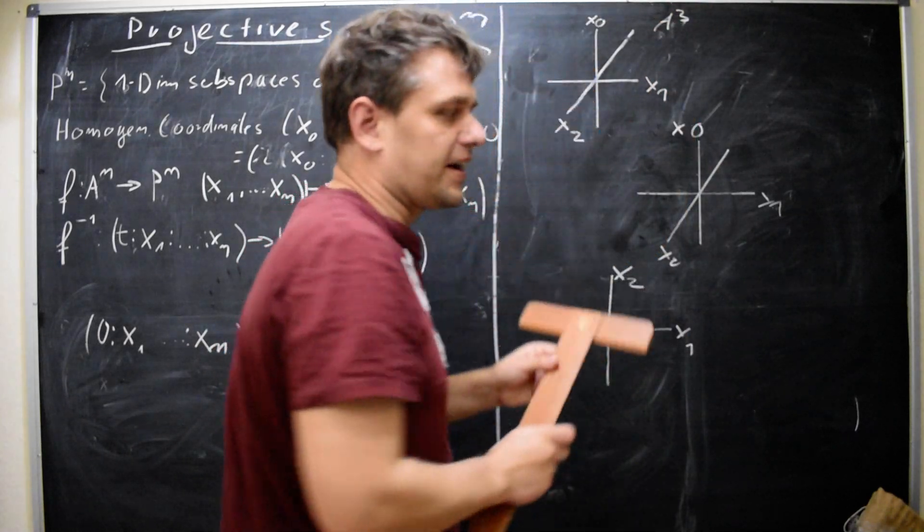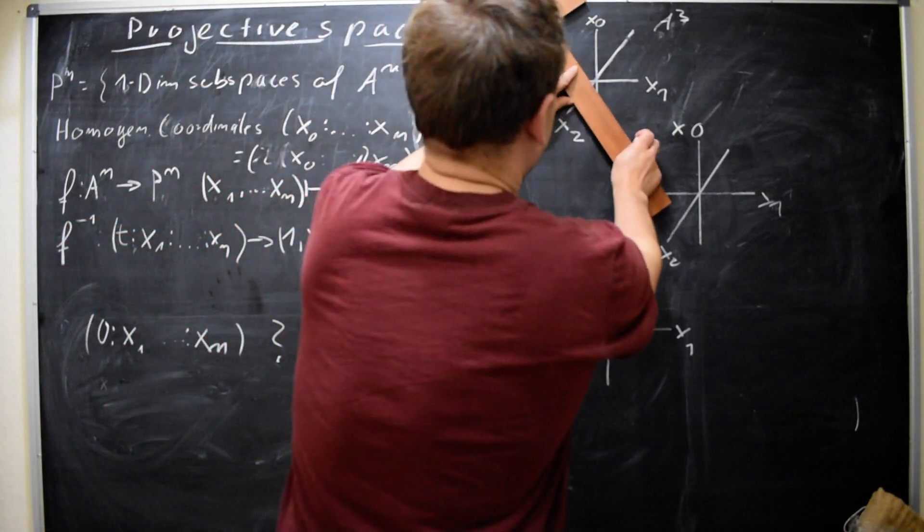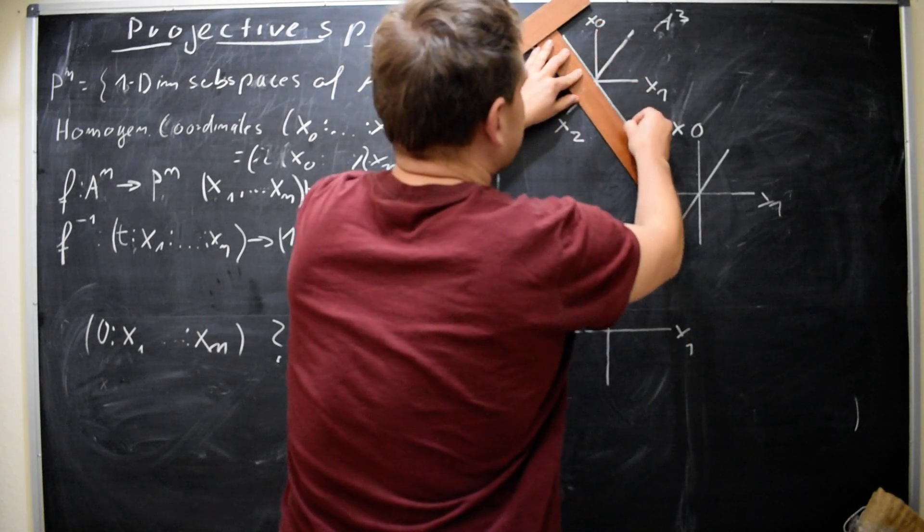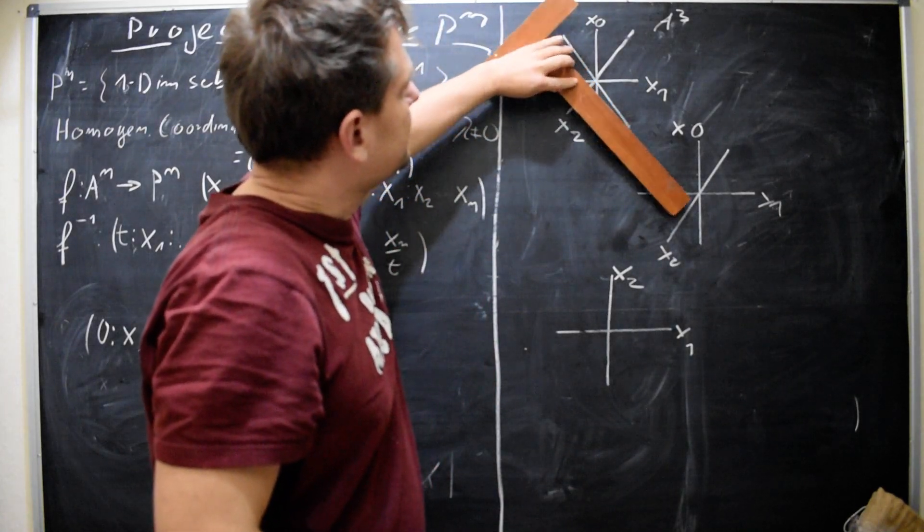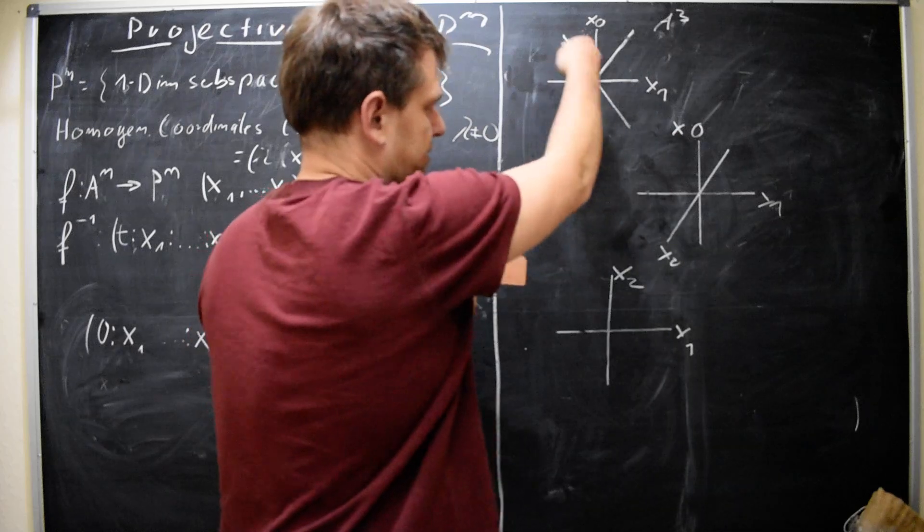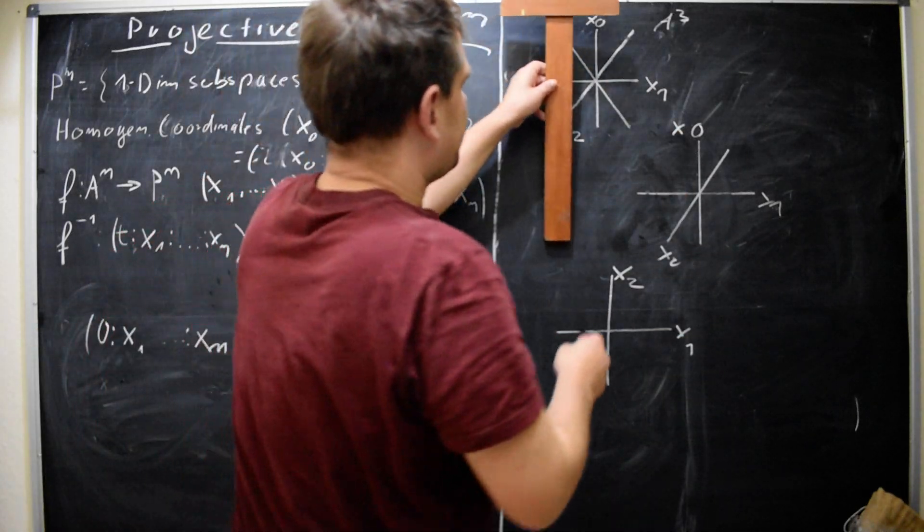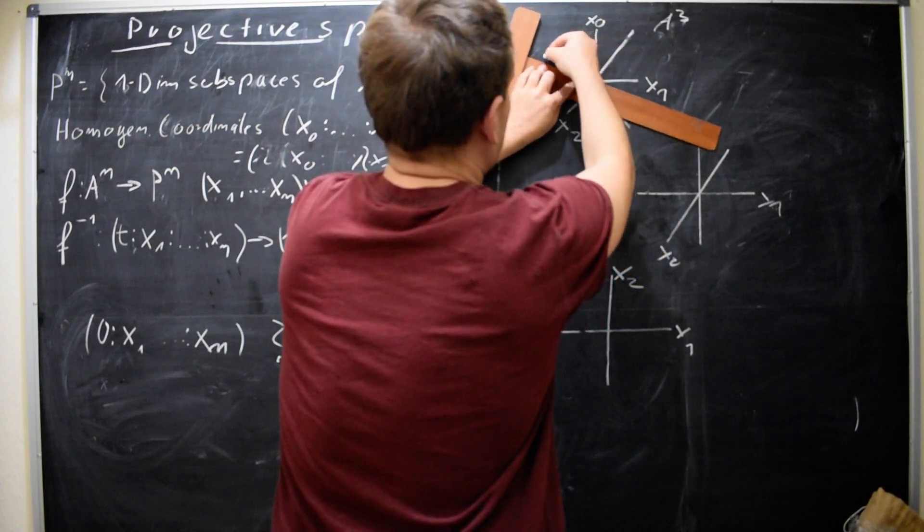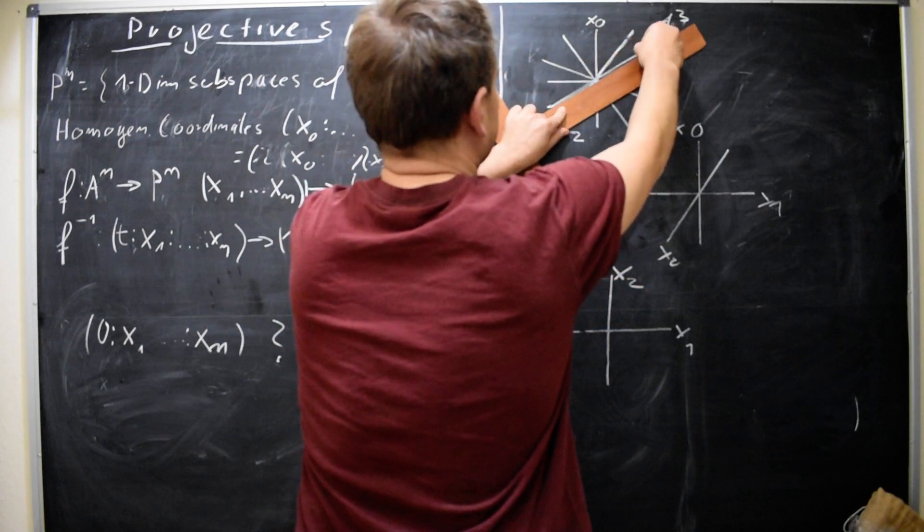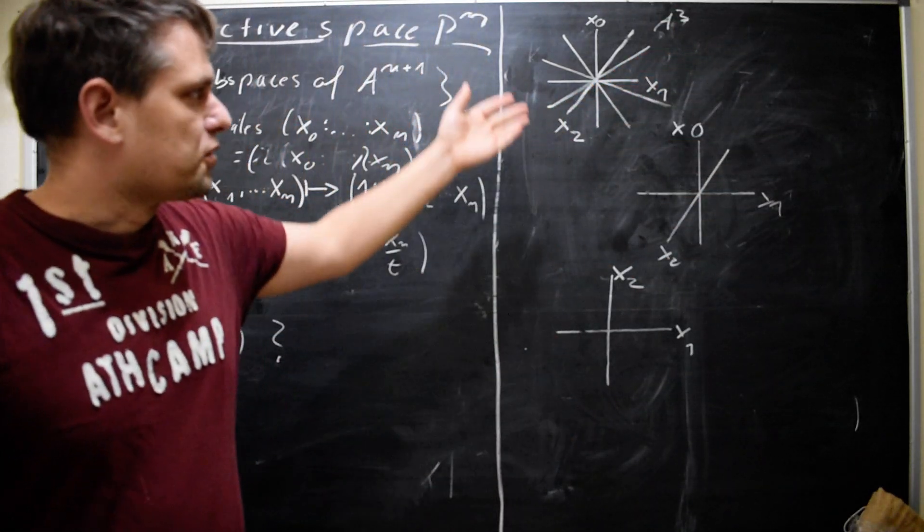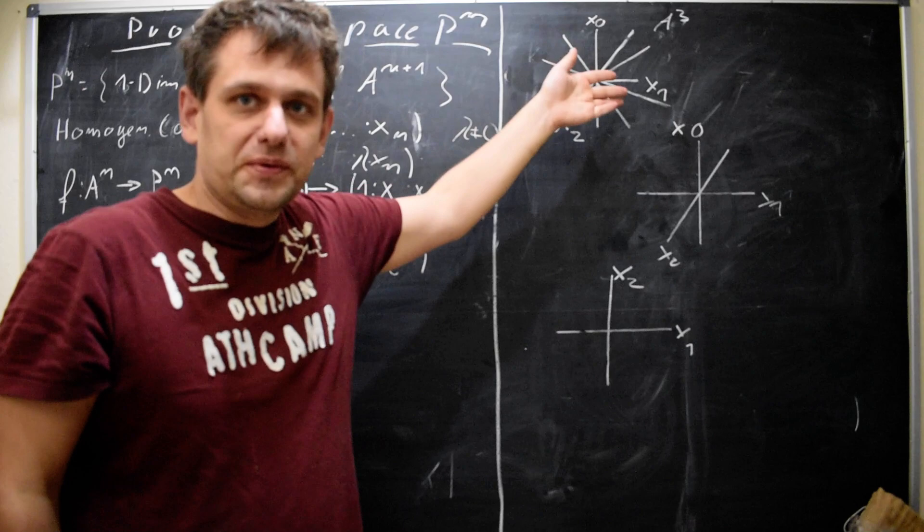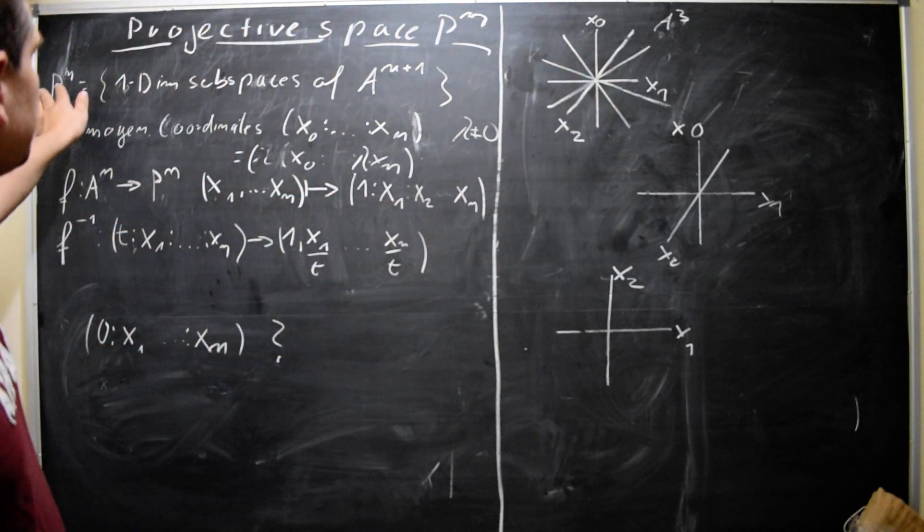I cannot draw all one-dimensional subspaces. I'm going to draw a few. Let's take a green chalk. So this light green line would be one-dimensional. Of course, this continues in both directions. It would be a one-dimensional vector subspace of A². And this one. And maybe let's draw one more. This one. And so on. But this set of green lines, if you will, this is what P² is.